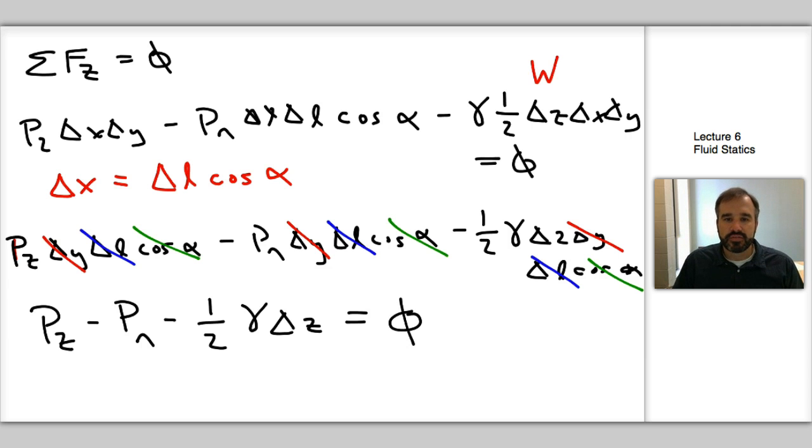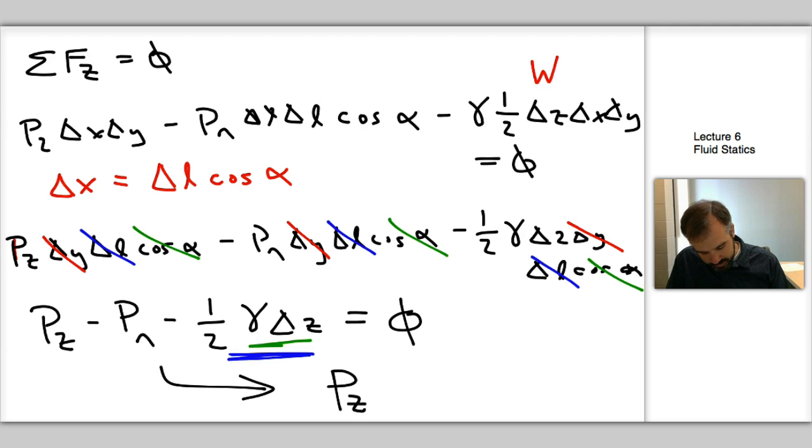The next thing we can do is take the limit as Z goes to zero. What happens there is that whole term, this whole term here, as delta Z goes through, that goes to zero. And we end up with PZ equal to PN.